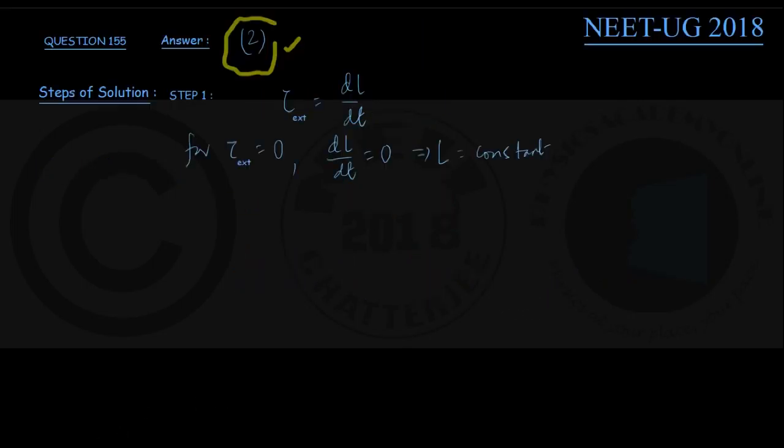That is the end of this question. However, for the sake of completeness and for the benefit of students, let us investigate the other options also which are telling that angular velocity, rotational kinetic energy, and moment of inertia may remain constant. Now are they constant?